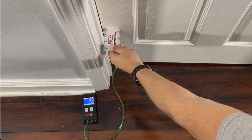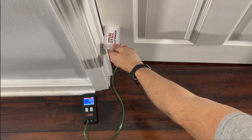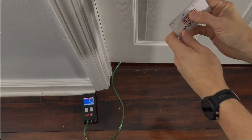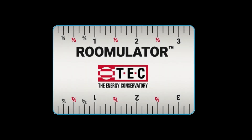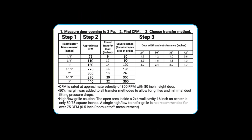Open the door until the gauge reads 3 pascals, then record the measurement on the roomulator. As we flip the card over, let's follow the process from left to right. We can see that we have just completed Step 1 — measuring our door opening to 3 pascals, with an opening of one and a half inches.